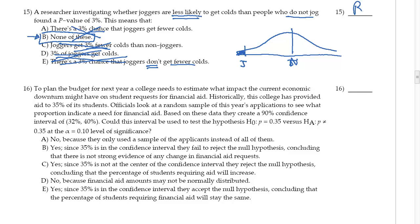So the idea here is that it's B, and the reason that it's B is because I need to be comparing that joggers have a 3% chance of getting an observed difference in getting colds than non-joggers. So there has to be some sort of comparison that they're not making here.